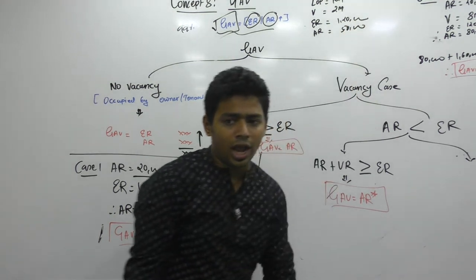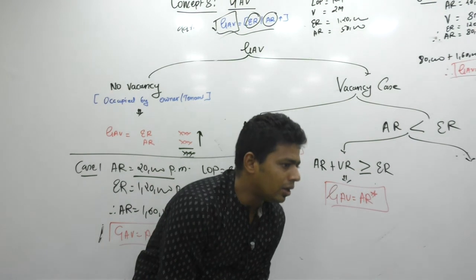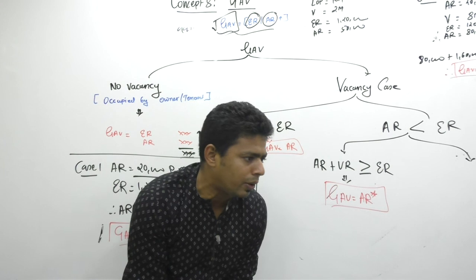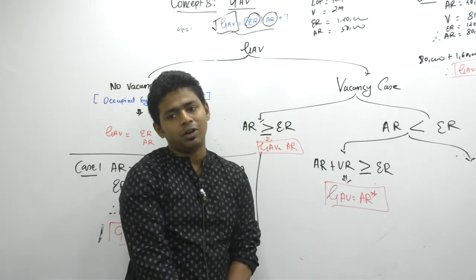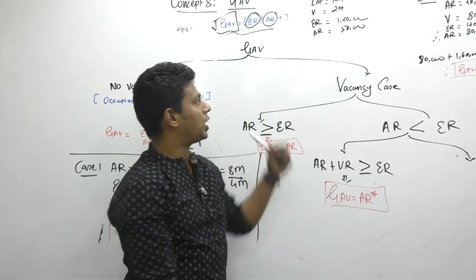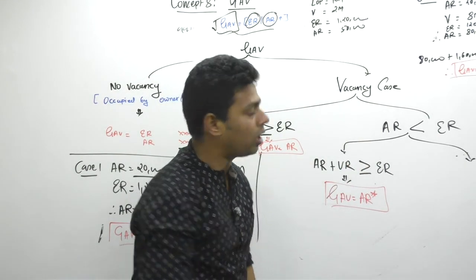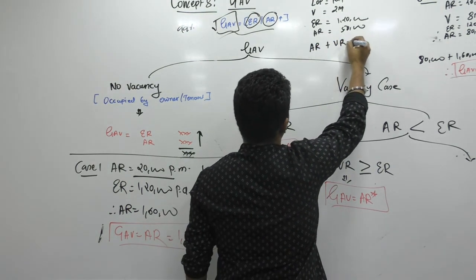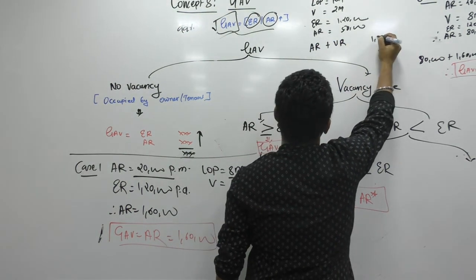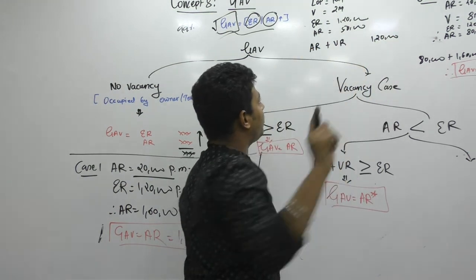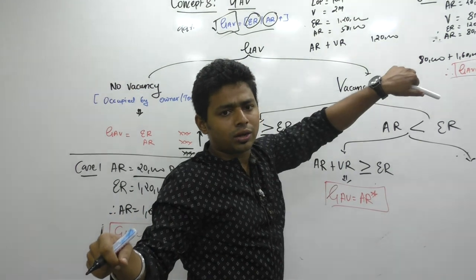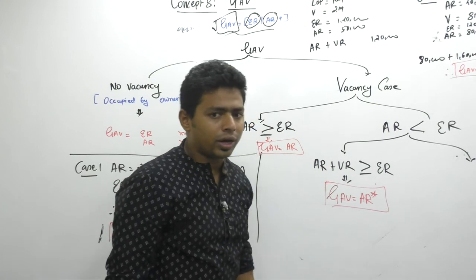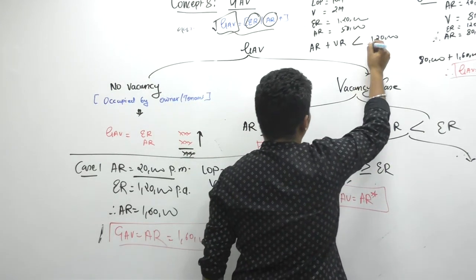Now, what I am asking the government — sir, my actual rent is lower than your expected rent only because of vacancy. Government says: okay, we will check. How? Actual rent plus vacancy rent should be more than or equal to expected rent. Actual rent is 50,000. Vacancy rent for 2 months is 10,000. Total is 60,000. Is it higher or lower than expected rent? It is lower than expected rent.